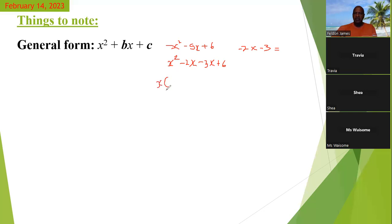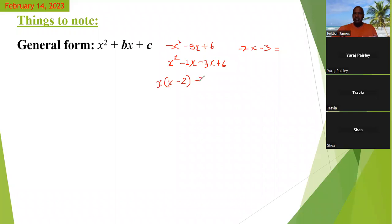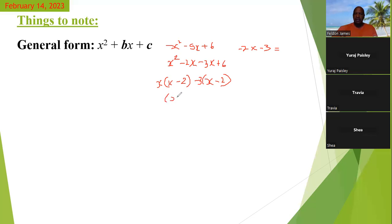When we factorize now, the common factor for the first pair would be what? X, sir. And if we divide X squared by X, you will get X. And if we divide negative two X by X, you will get minus two. And if we divide negative three X, before we move on, the common factor here would be negative three. So we would pull out negative three as the common factor.